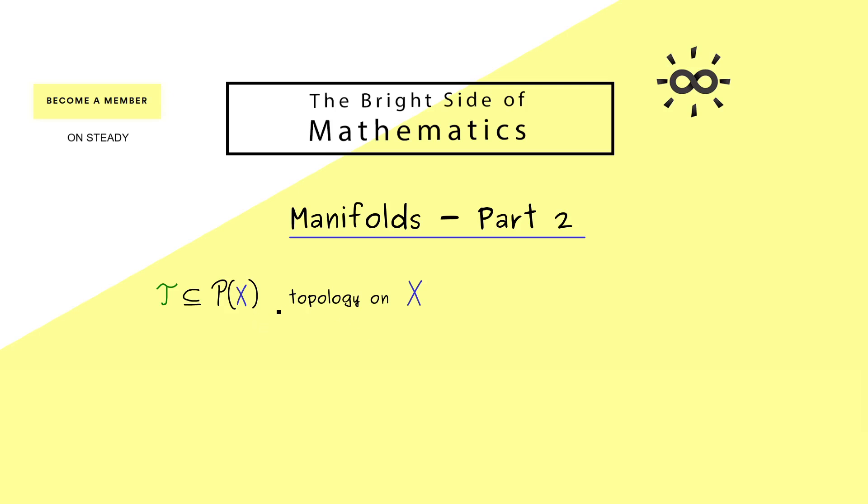For this, please recall that a topology on a set X is a collection of subsets that satisfies 3 rules. First, the smallest and the largest subset have to be involved. Secondly, you cannot leave the topology by finitely many intersections.